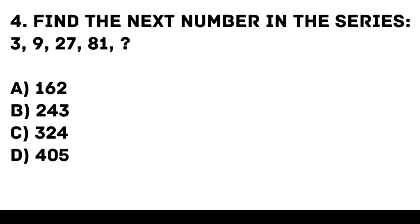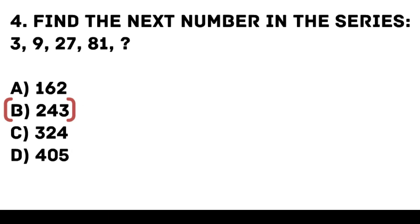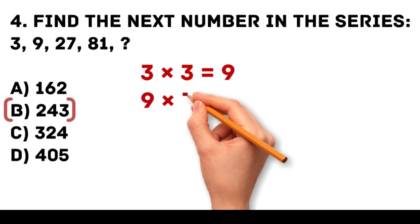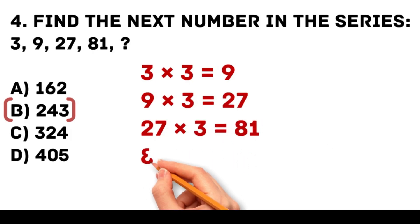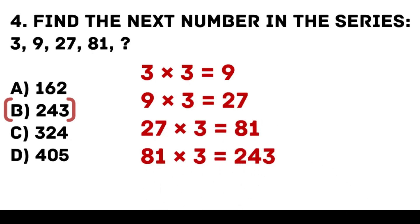Answer: B. 243. Each number in the series is multiplied by 3. 3 times 3 is equal to 9. 9 times 3 is equal to 27. 27 times 3 is equal to 81. 81 times 3 is equal to 243.